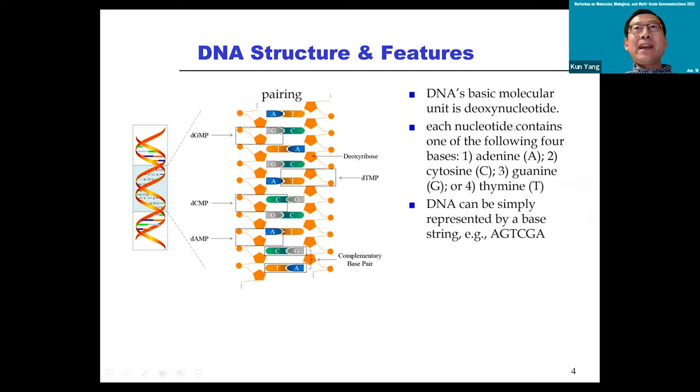DNA, its basic molecular unit is also called deoxynucleotide. Each nucleotide contains one of the following four bases: the famous A, G, C, T, and they come in pair. A always with T and G with C. This is called pairing. By having those bases, we can simply represent a DNA using a base string like AGTCG, etc. So that's some basic concepts of DNA.